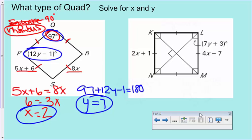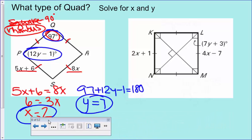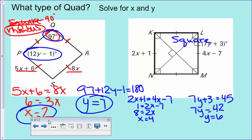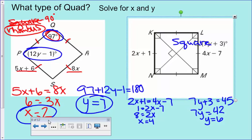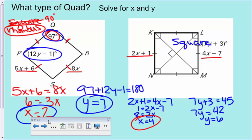For the second problem, the answer is a square — all sides are equal, and the angles are 90 degrees in the corners and 90 degrees at the center. Setting equal side expressions gives x = 4. Since the diagonal angle shown (7y + 3) is part of the 90-degree center angle bisected into 45 degrees, set 7y + 3 = 45 and solve to get y = 6.